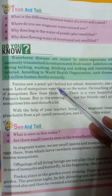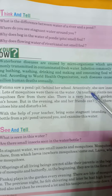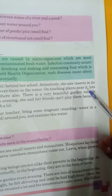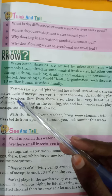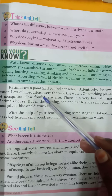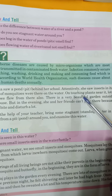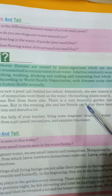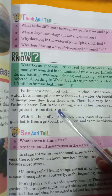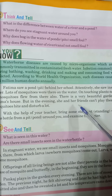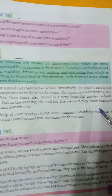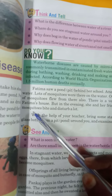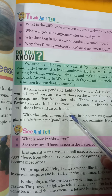Fatima saw a pond behind her school. Attentively she saw insects in its water. Lots of mosquitoes were there on the water, and on touching plants near it, lots of mosquitoes flew from there also. There is a very beautiful garden outside Fatima's house, but in the evening she and her father's friends can't play there because mosquitoes bite and disturb a lot.